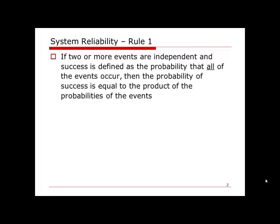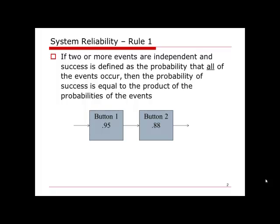Rule 1 says if two or more events are independent and success is defined as the probability that all of the events occur, then the probability of success is equal to the product of the probability of each event. The example says that we have two buttons — to successfully run the machine, both buttons need to be pressed. So this is what I call a serial structure.